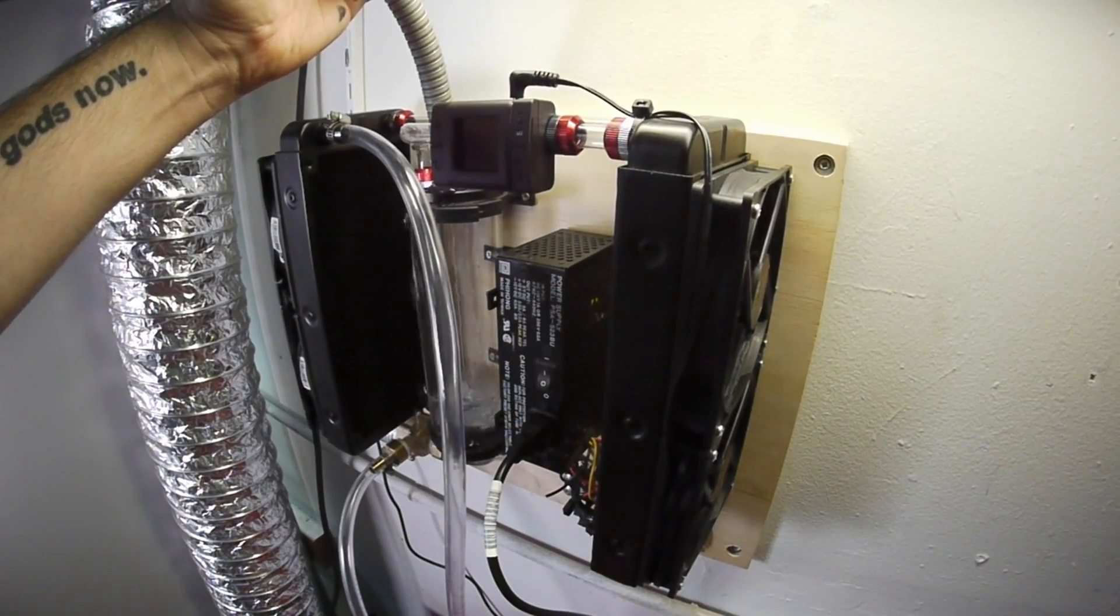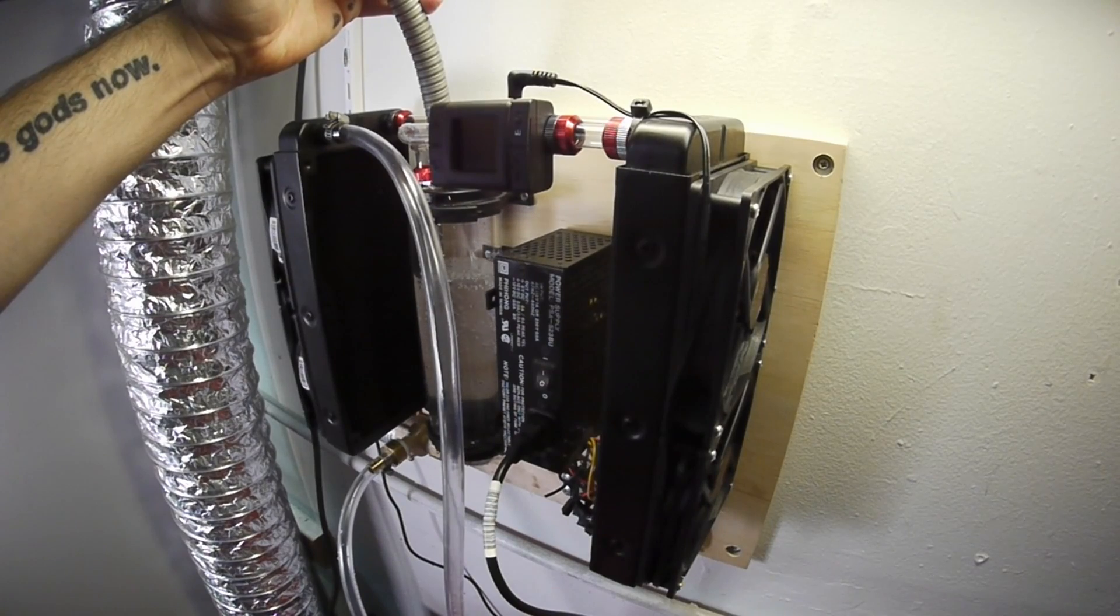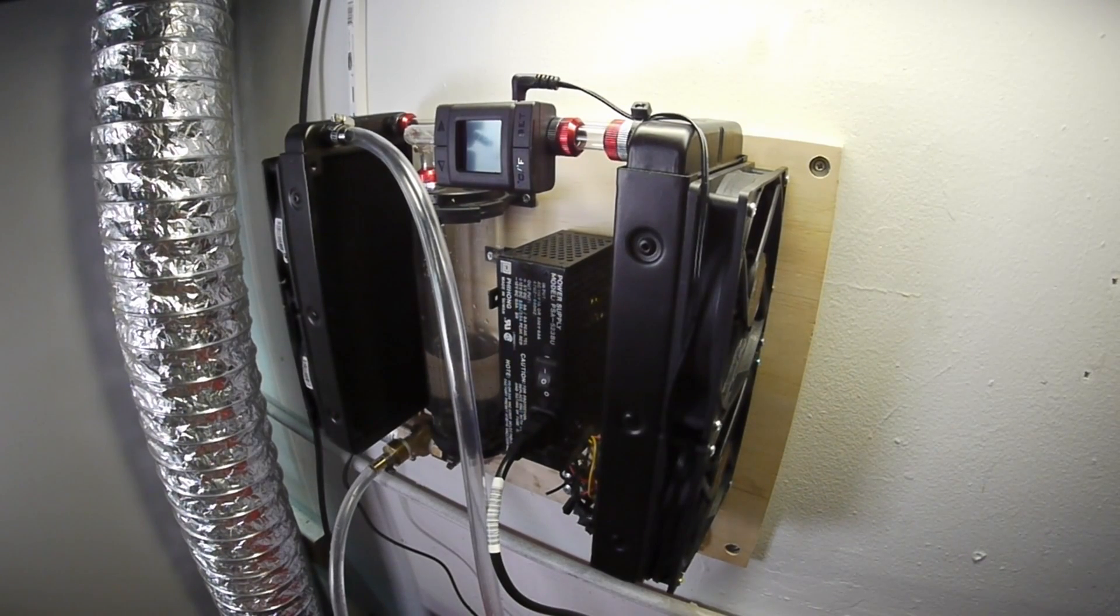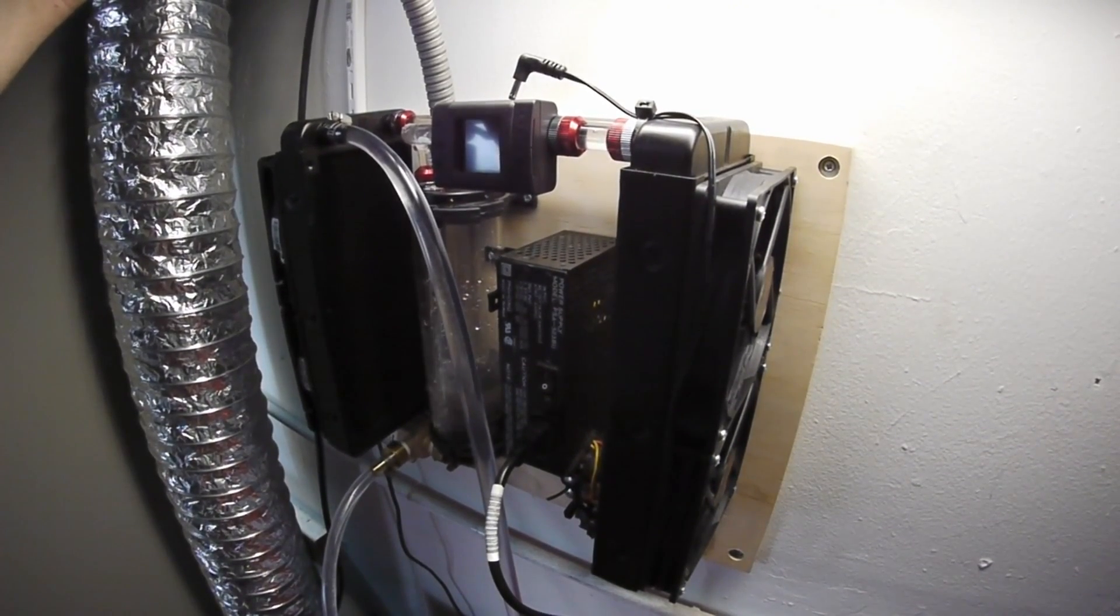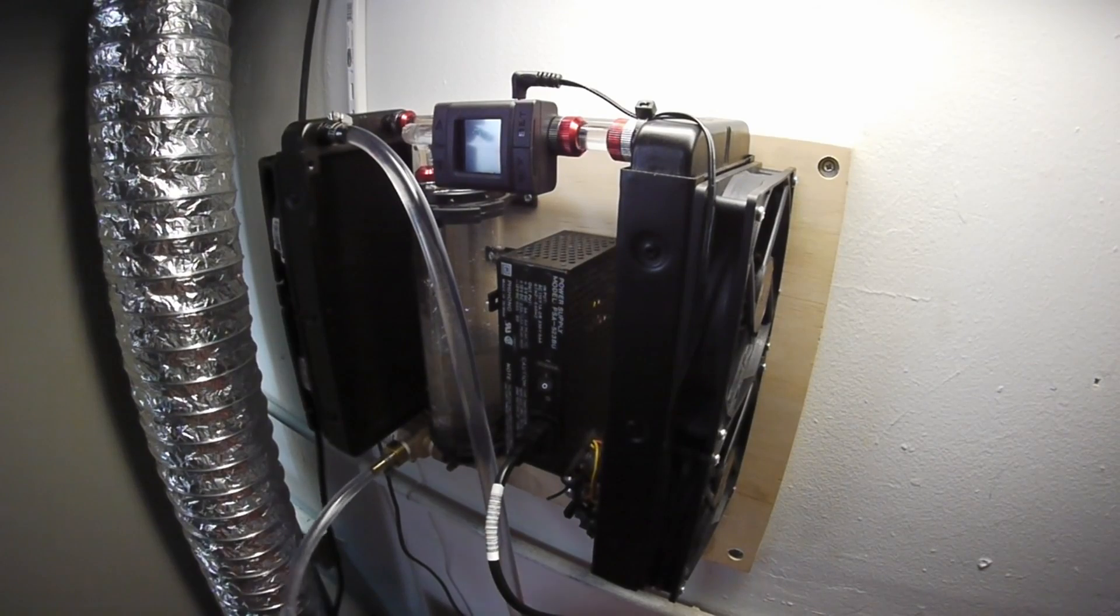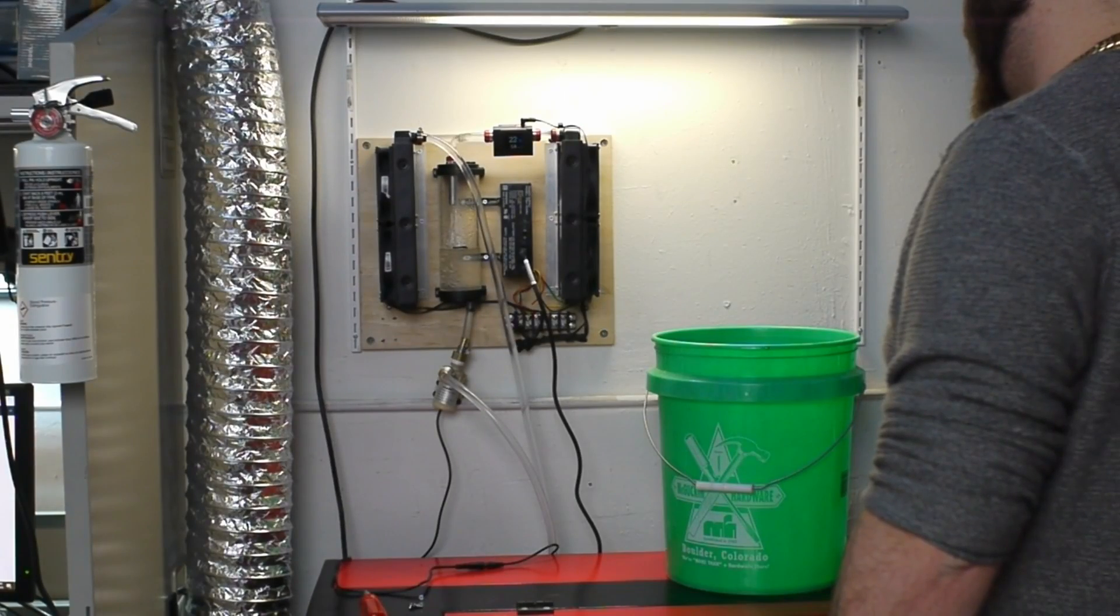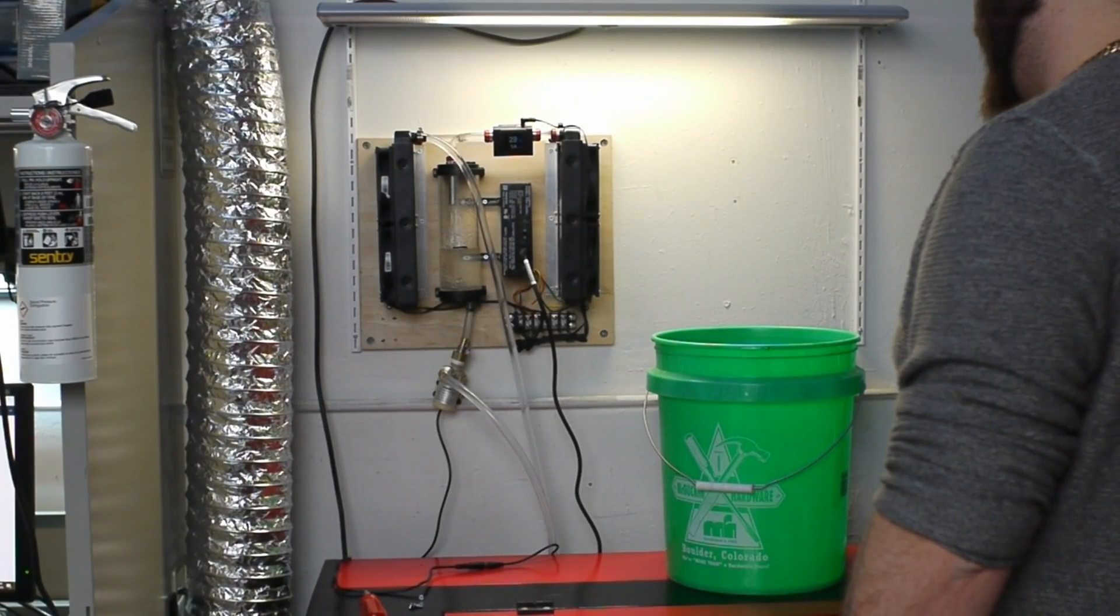I filled up the system with distilled water, and once I was pretty sure that there weren't any leaks, I added some system prep. This is a biocide intended to inhibit mold and bacteria growth in the loop, and you need to let it run for about 24 hours. So I let it go overnight, and I kept an eye on it just to make sure we didn't have any sort of catastrophic failure.